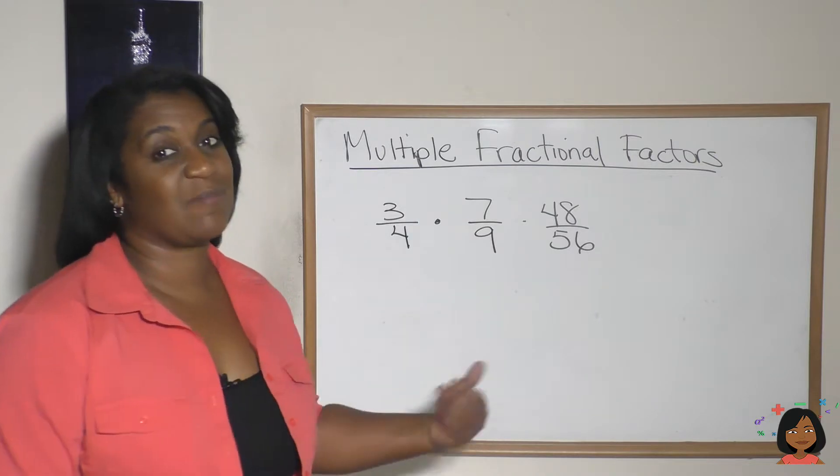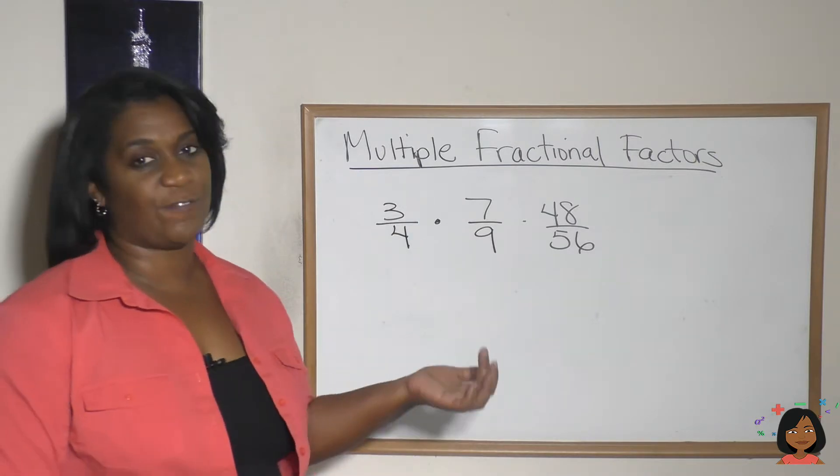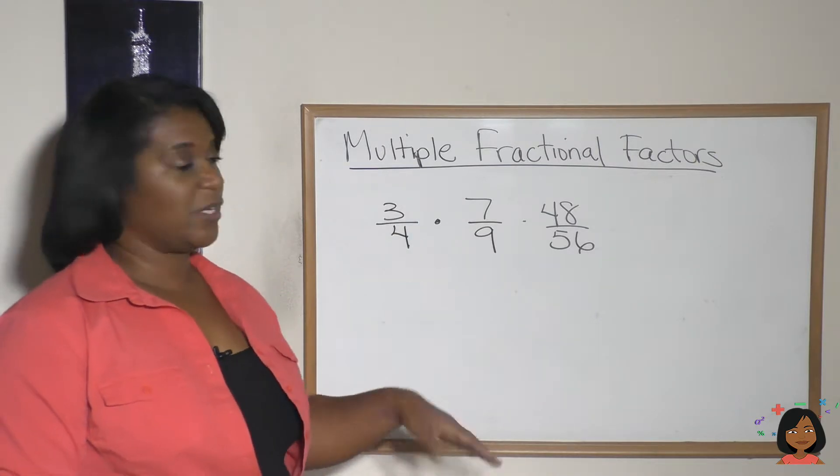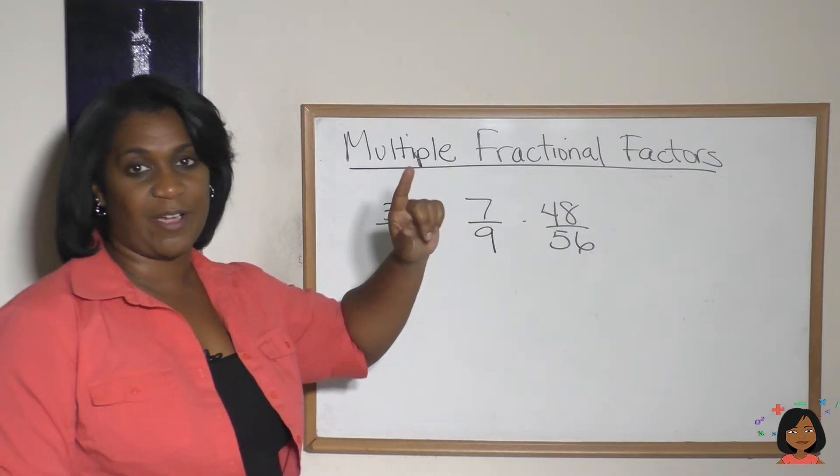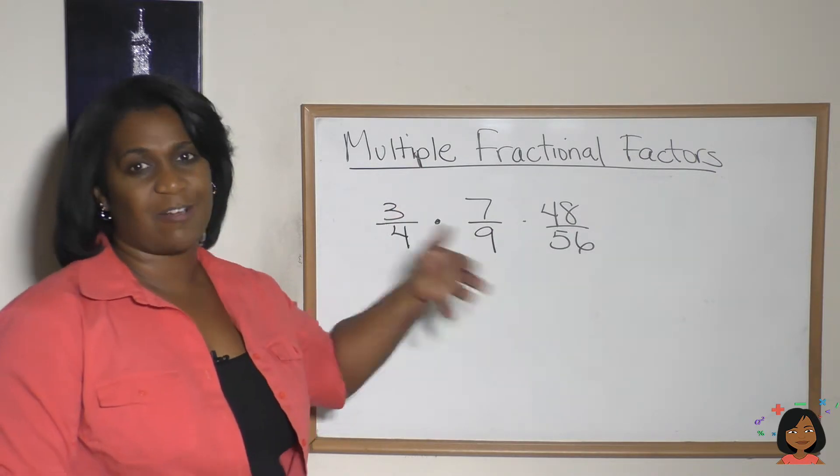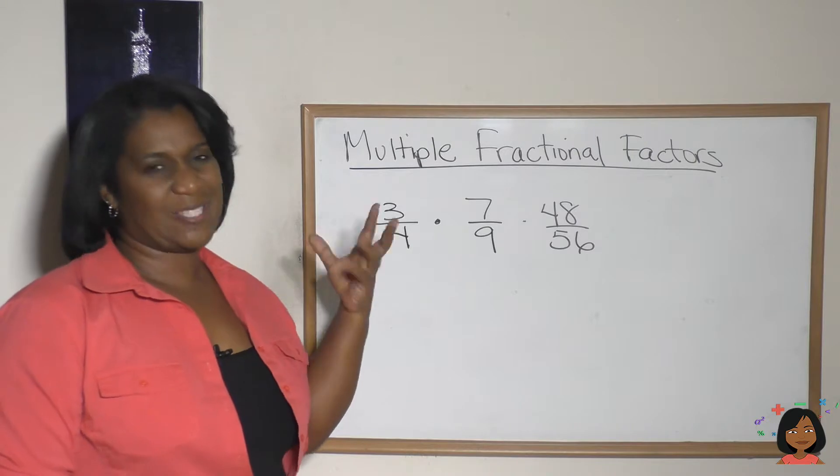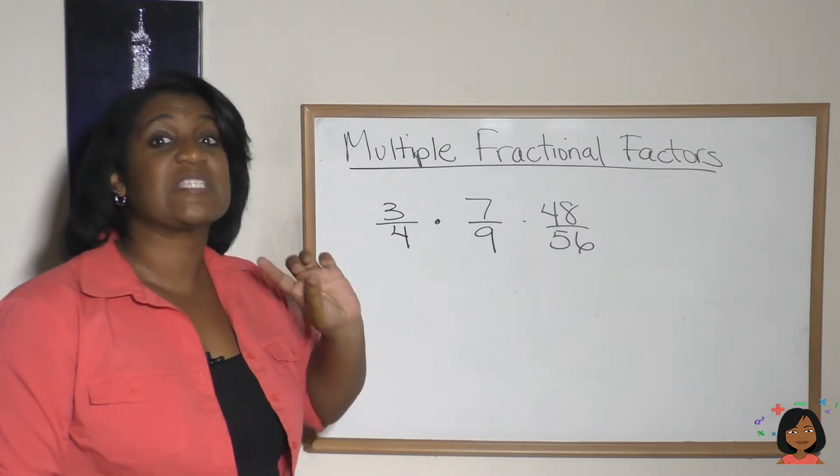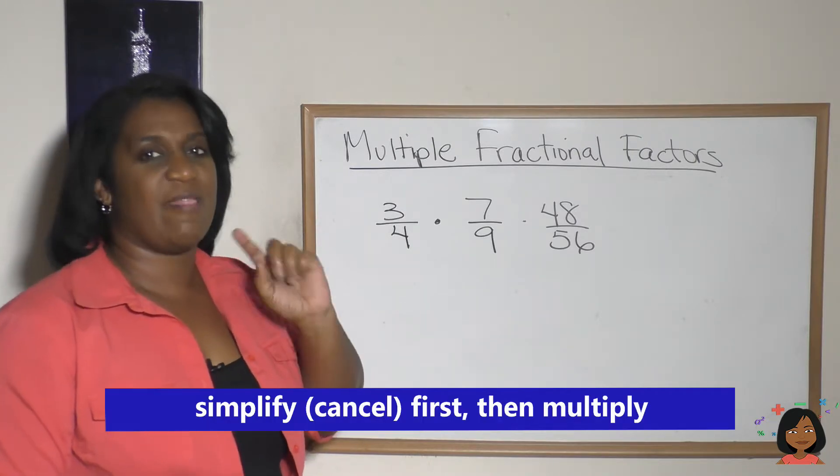Take a look at this one: three-fourths times seven-ninths times 48 over 56. Now of course we could easily multiply across the numerator, multiply across the denominator, and then try to simplify. That's a whole lot of multiplying, so why don't we try to simplify first and then multiply?